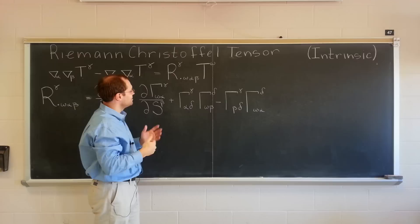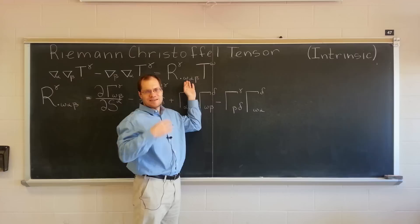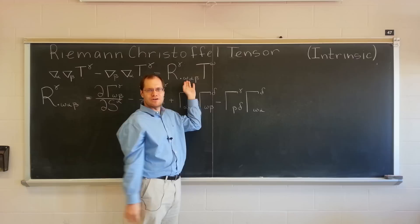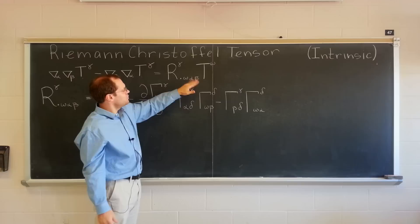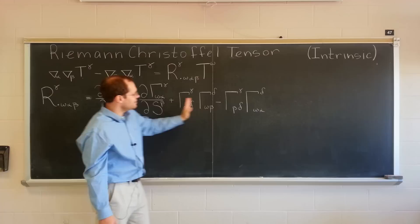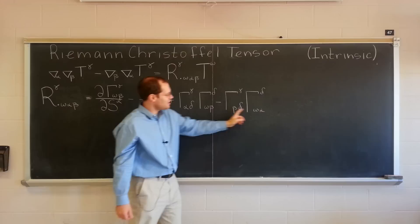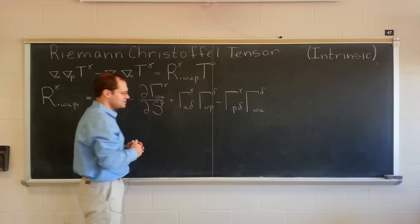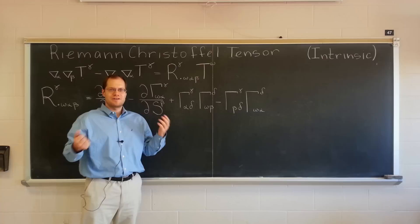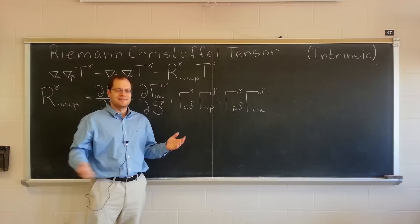So the Riemann-Christoffel tensor is in fact a tensor. Even though nothing about its expression looks like a tensor — the Christoffel symbols are not tensors, and their partial derivatives even less so — yet the combination is a tensor. For us, if some important object is not a tensor, that's a deal breaker. So it's very fortunate that this object is a tensor.